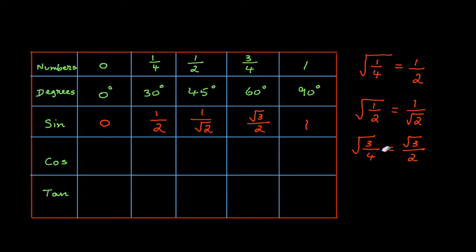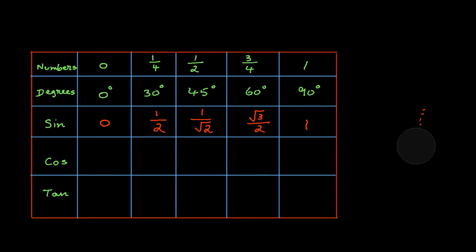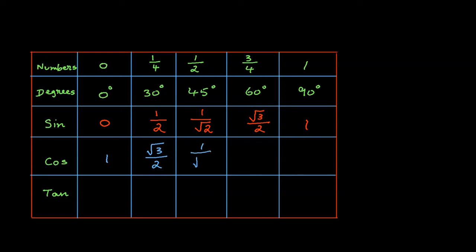This is how you find the values for sine. For cosine, it is very easy — all you have to do is just reverse the values you got for sine. For cosine 0 degrees, it is 1. For cosine 30 degrees, it is square root of 3 over 2. For cosine 45 degrees, it is 1 over square root of 2. Notice that sine 45 degrees and cosine 45 degrees give you the same value: 1 over square root of 2. Cosine 60 degrees is 1/2, and cosine 90 degrees is 0.